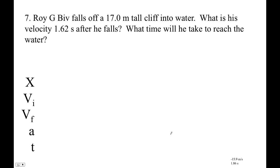Roy G. Biv. Roy G. Biv is a very fine guy. Alright, let's see. Falls off a cliff. He's fallen off a cliff, right? Okay, so what is his velocity 1.62 seconds after he falls, and then what time will he take to reach the water?